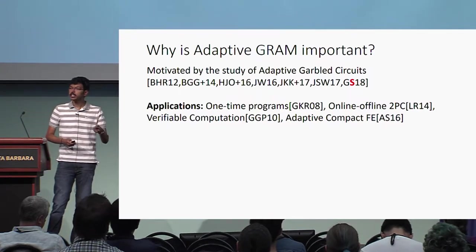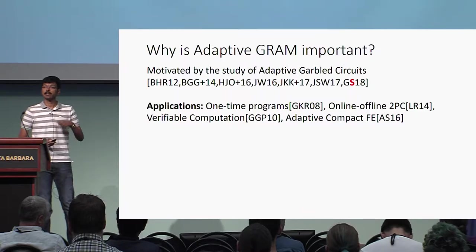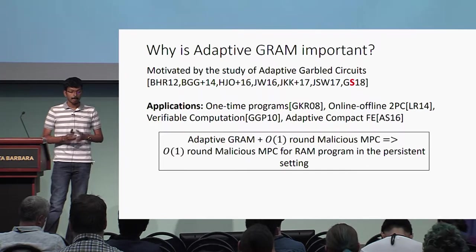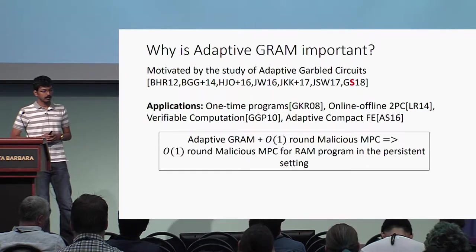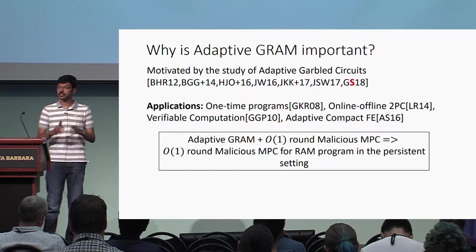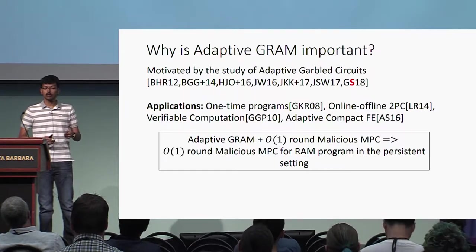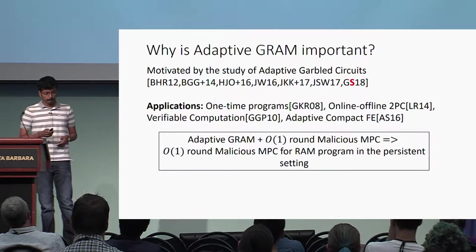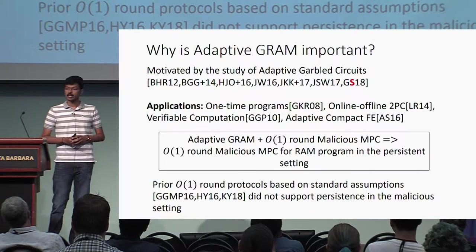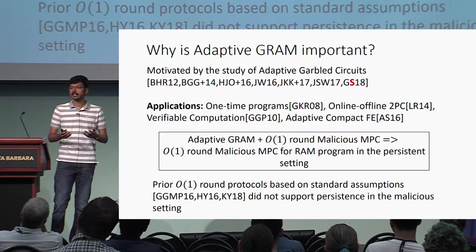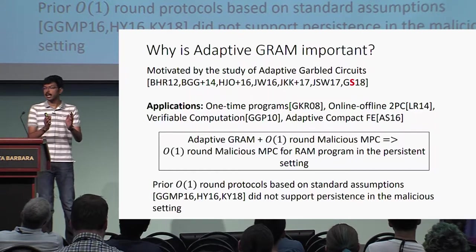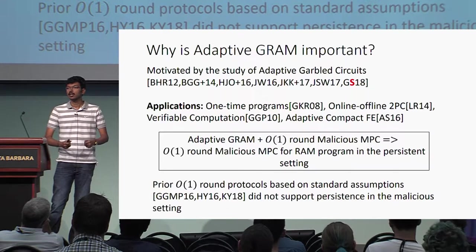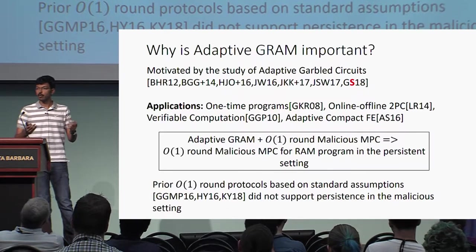In addition to these applications, adaptive garbled RAM has several interesting consequences for MPC for RAM programs. In particular, combining an adaptive garbled RAM scheme with a constant-round malicious MPC for circuits, one can obtain a constant-round malicious MPC for RAM programs in the persistent setting. Prior constant-round protocols based on standard assumptions could not support persistence in the malicious setting, and hence constructing adaptive garbled RAM from standard assumptions would readily give a solution to this problem. Thus, adaptive garbled RAM is a well-motivated question.